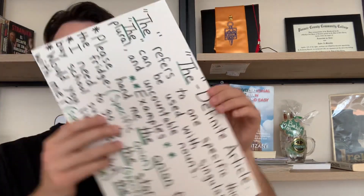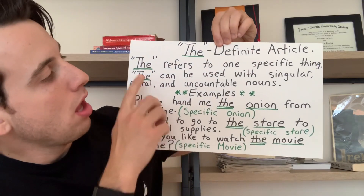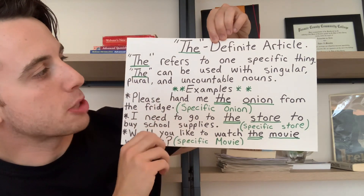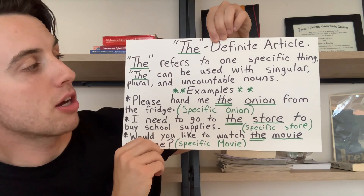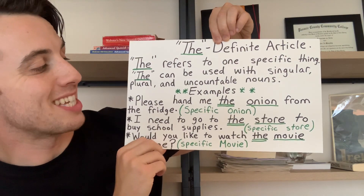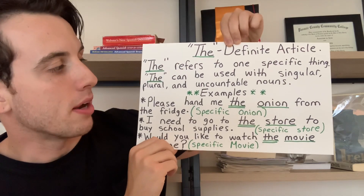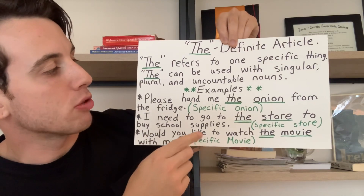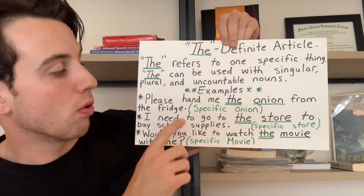To begin with the definite article, 'the.' 'The' refers to one specific thing. 'The' can be used with singular, plural, and uncountable nouns. Some examples using the definite article 'the':